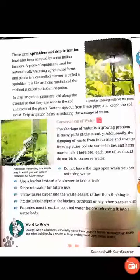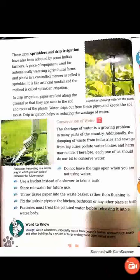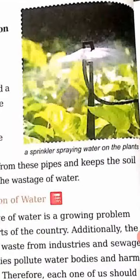These days sprinklers and drip irrigation are used. Sprinklers are placed in one spot and spread water in four directions. A piece of equipment used for automatically watering agricultural farms and plants in a controlled manner is called a sprinkler, as you can see in the picture. This sprinkler is used to apply a short amount of water.